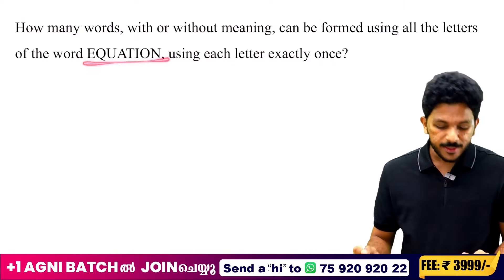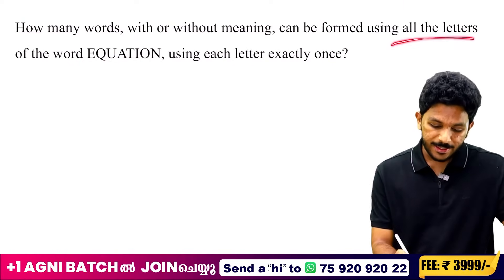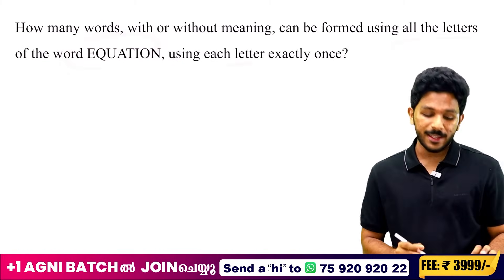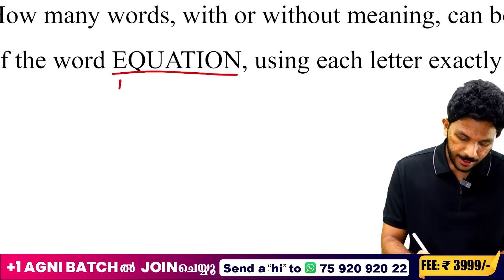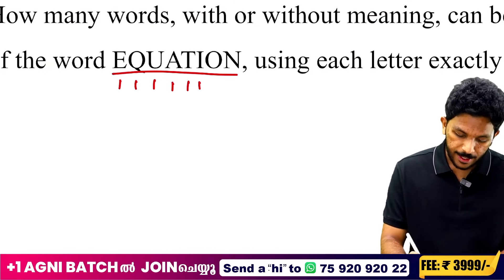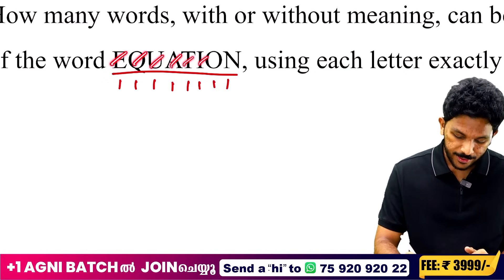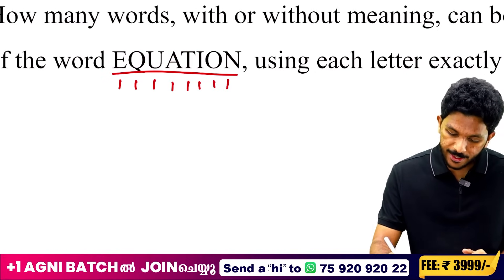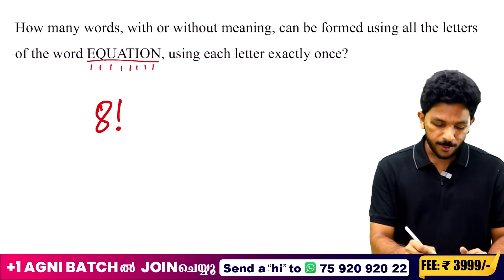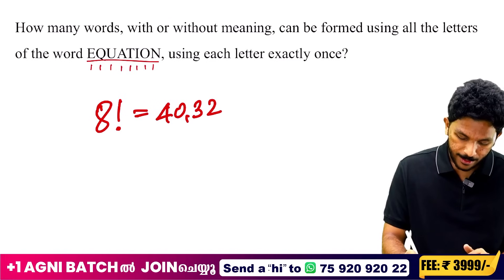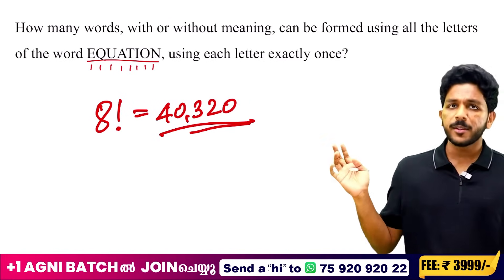Now, how many arrangements are there for the letters of EQUATION? E, Q, U, A, T, I, O, N — that is 8 letters. It's very simple: 8! = 40,320. Check it on the calculator — it's 40,320. There is no repetition of letters in EQUATION, so the answer is 8! = 40,320.